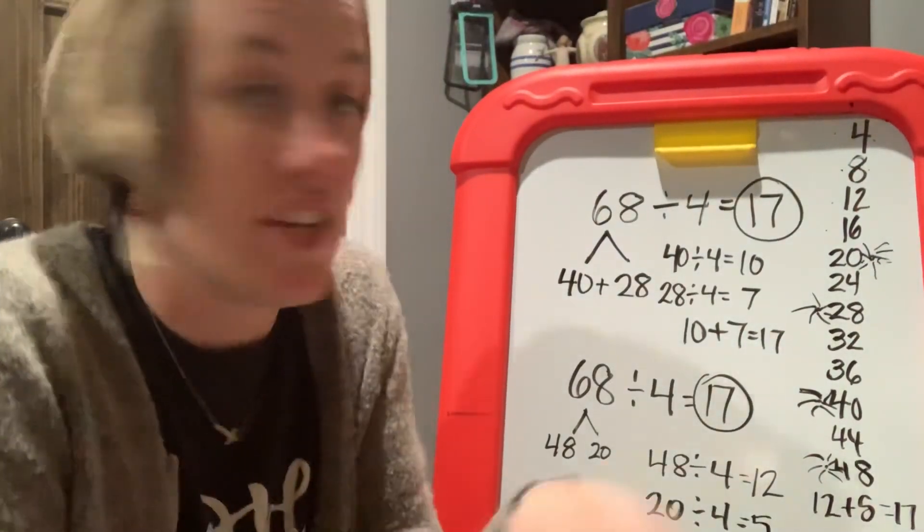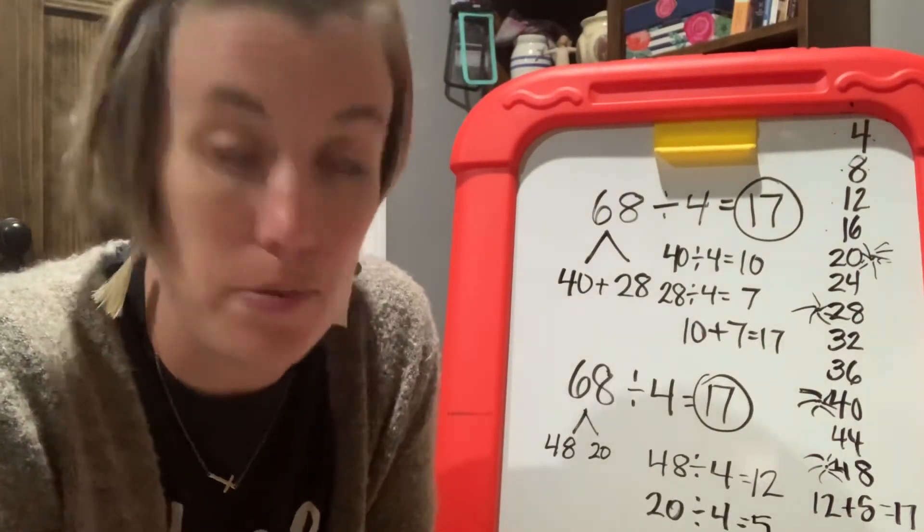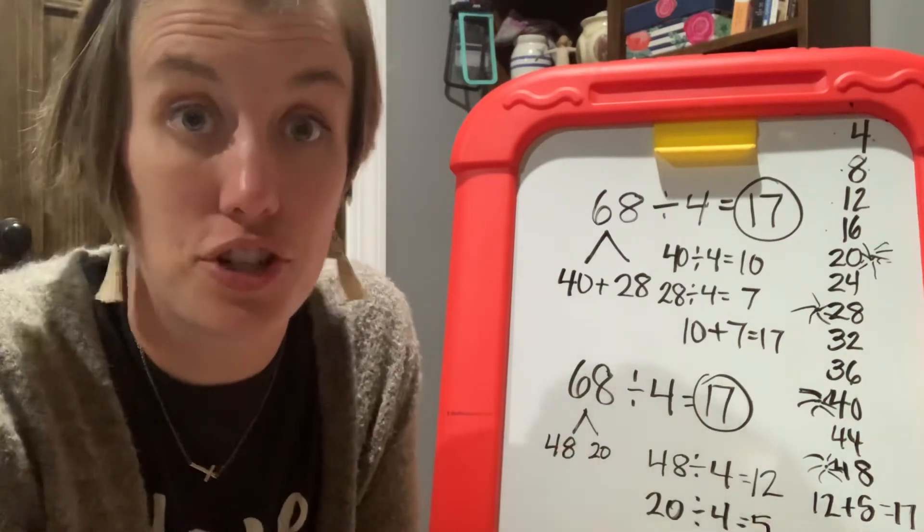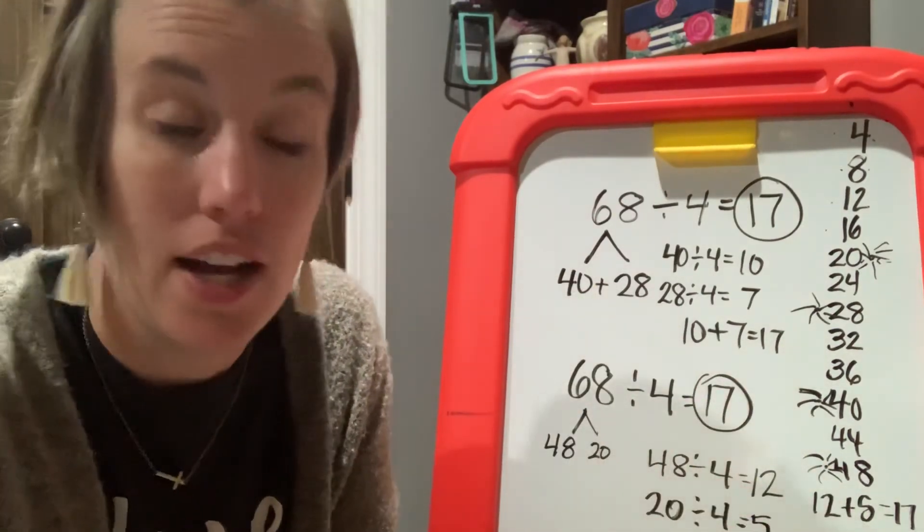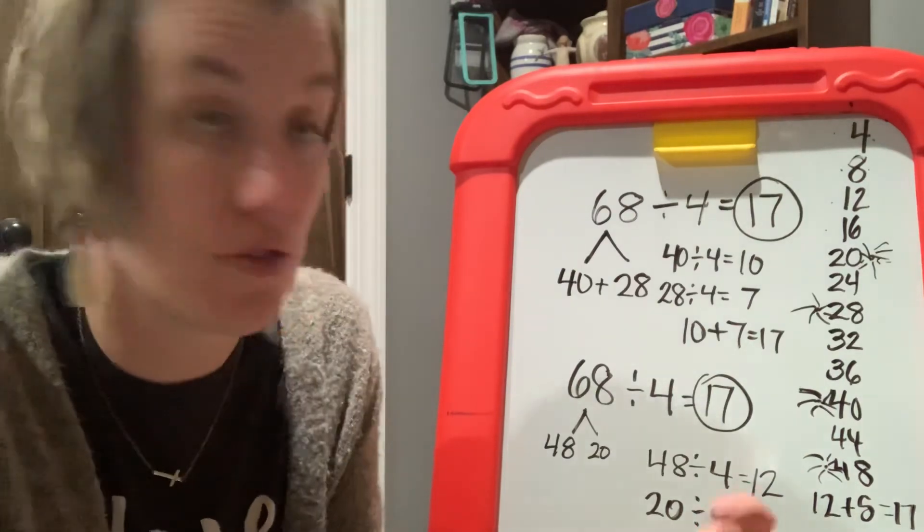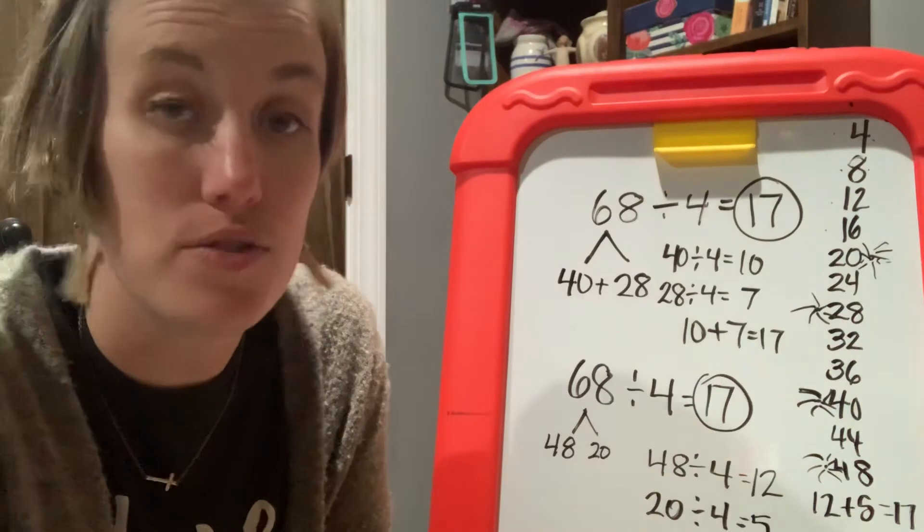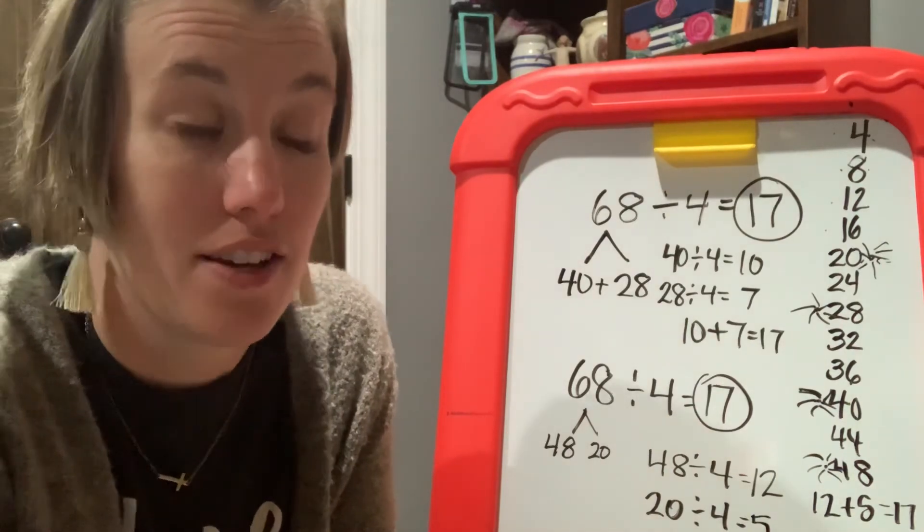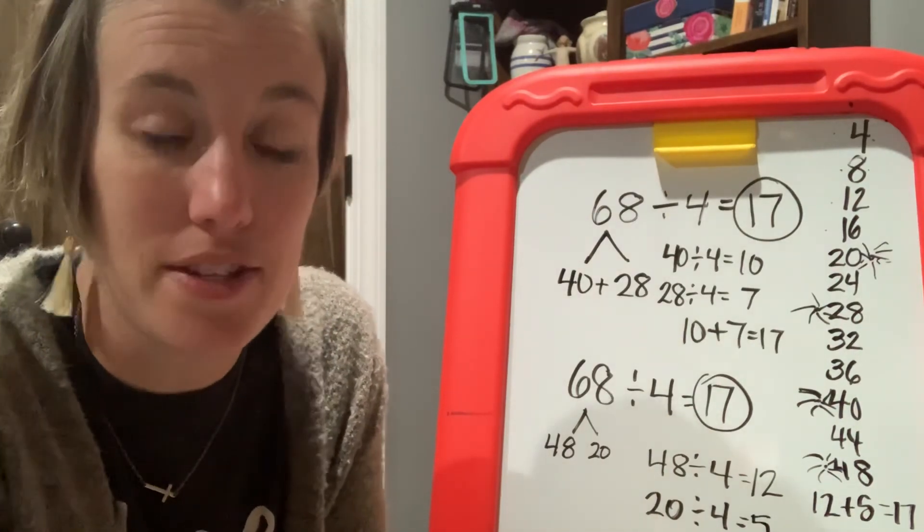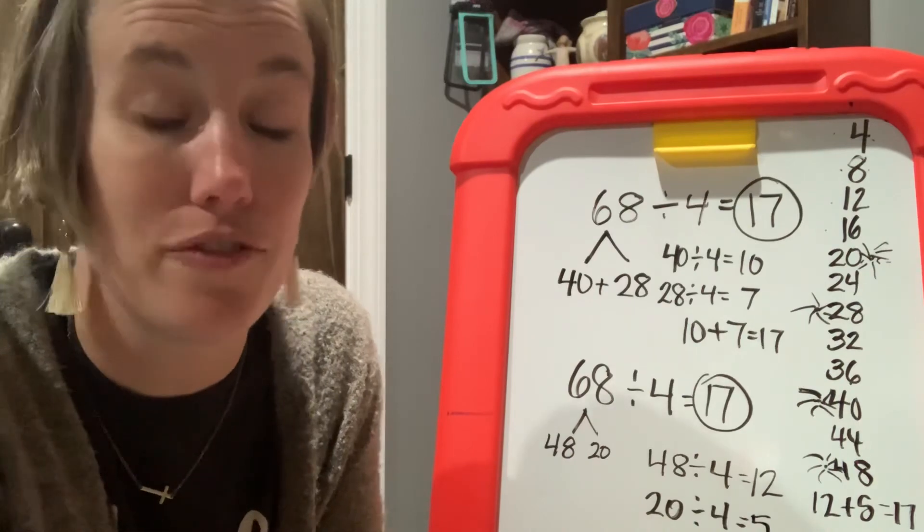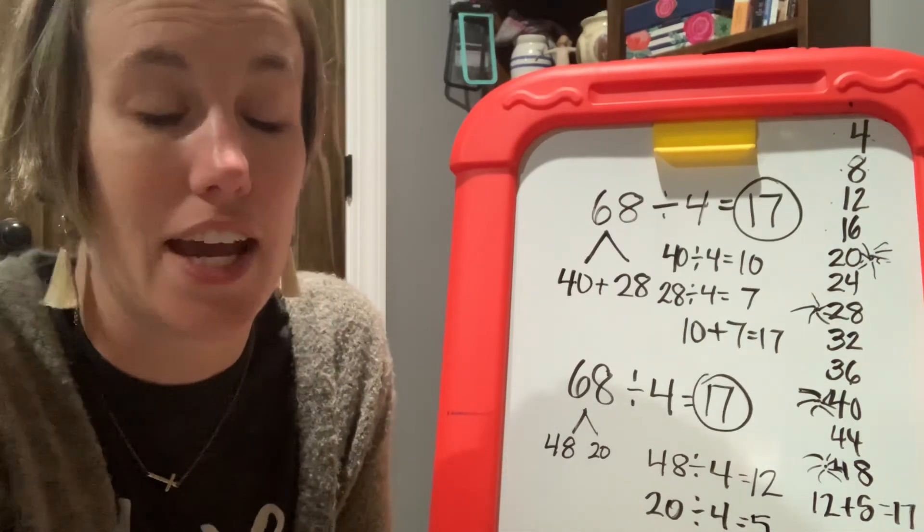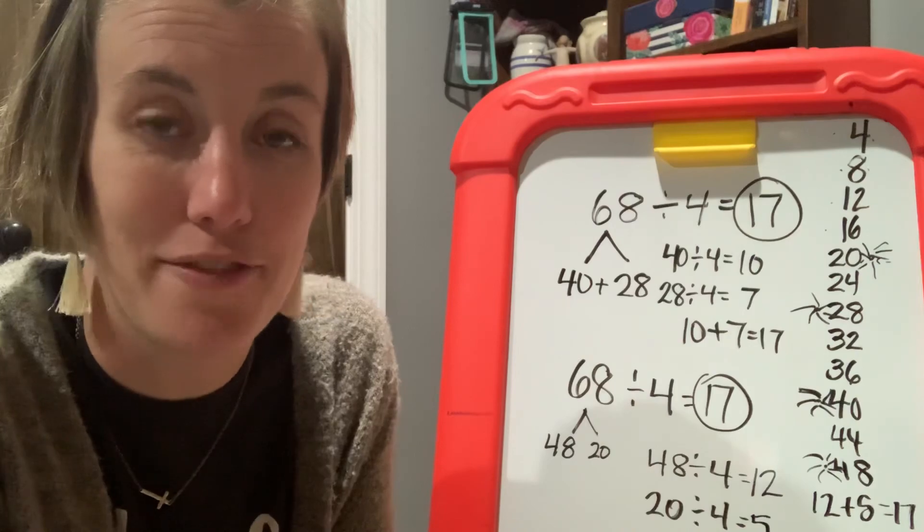So this is division using the distributive property when you have larger dividends. And maybe in a later video, we'll do three-digit dividends. But this is good for now. Two-digit dividends using the distributive property fourth grade math standard. I hope this helped your fourth grader. I hope it helped you if you are the fourth grader. And we'll see you next time in another great math video.